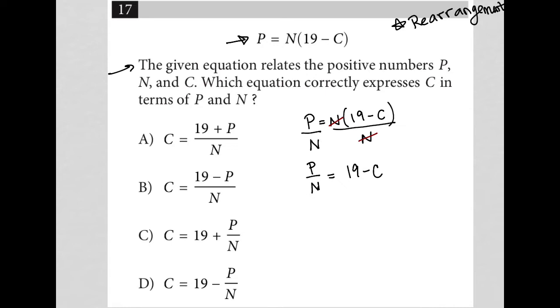I'm going to write that without the parentheses because there's no longer a need for parentheses since the N is no longer in front of this binomial 19 minus C.